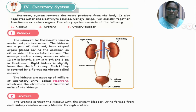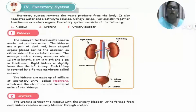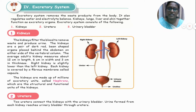The kidneys are made up of millions of excretory units called nephrons, which are the structural and functional units of the kidney. Now let's move on to ureters. Two ureters connect the kidney with the urinary bladder.